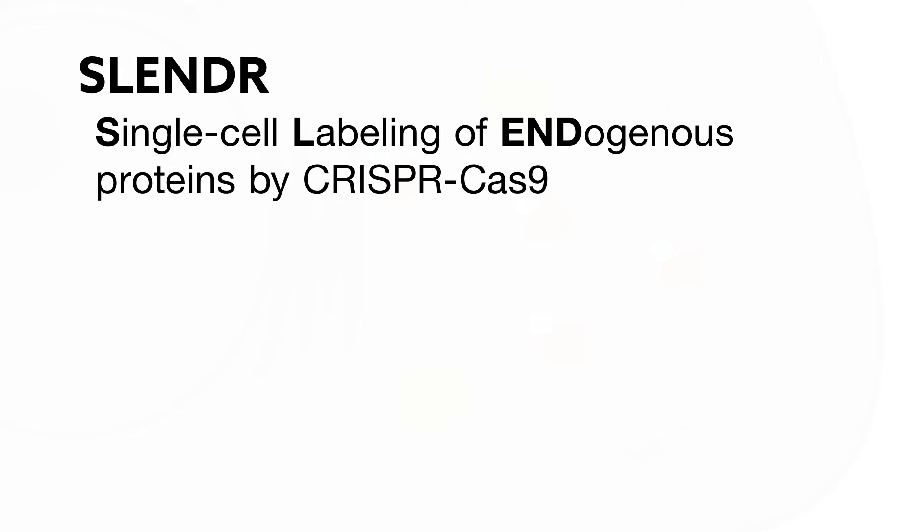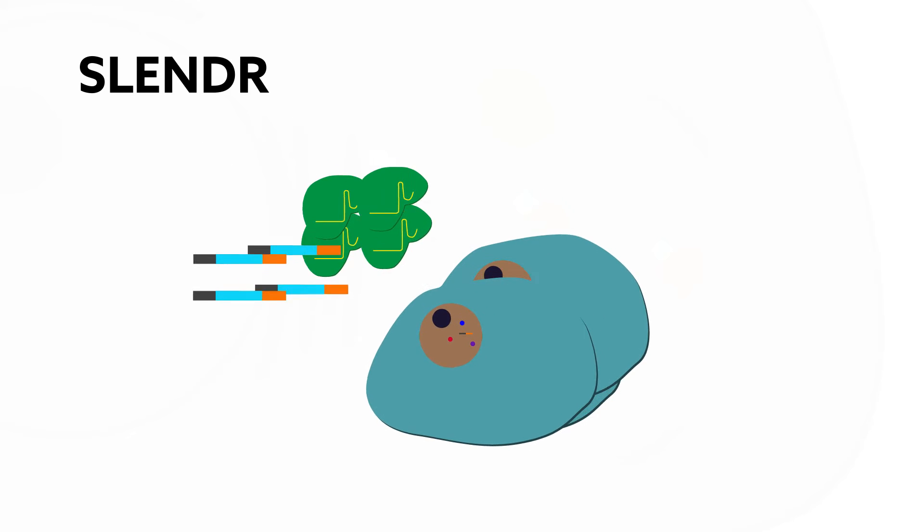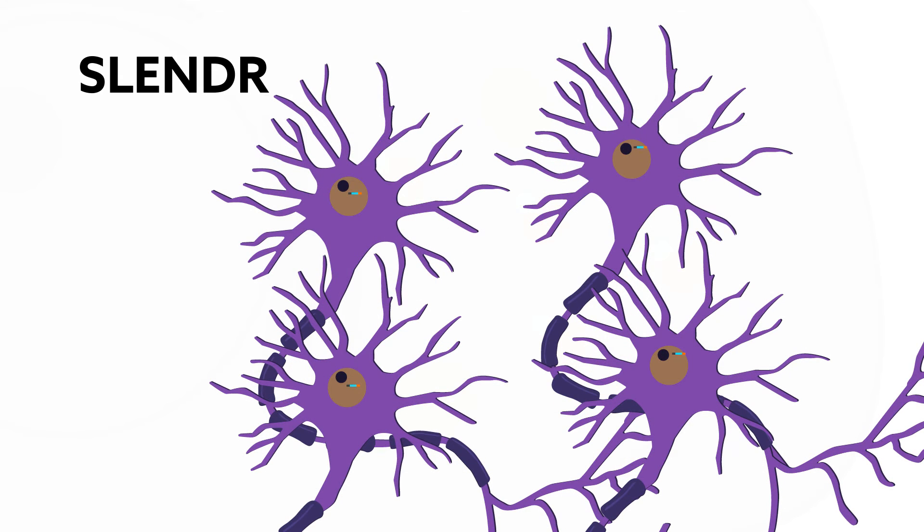SLENDER, which is short for Single Cell Labeling of Endogenous Proteins by CRISPR-Cas9-Mediated Homology-Directed Repair, overcomes these limitations by applying CRISPR-Cas9 to the immature, dividing cells that generate the mature cells of interest, instead of targeting the mature cells directly.